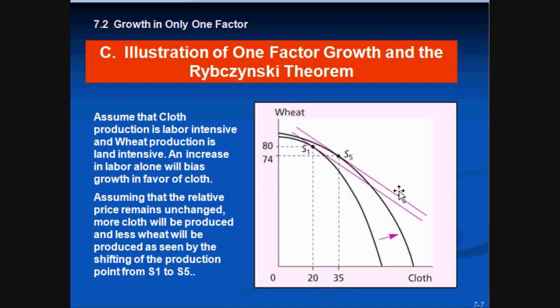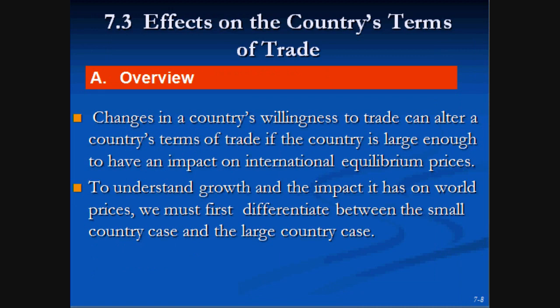If we apply utility-maximizing curves, we will see that S5 is better off than S1, but they are both actually parallel, so terms of trade remain the same and prices remain the same. Changes in a country's willingness to trade can alter its terms of trade if it is a large country and large enough to impact international equilibrium prices.